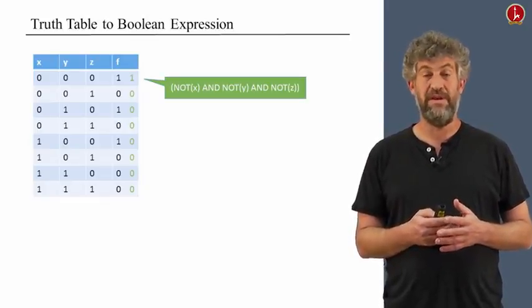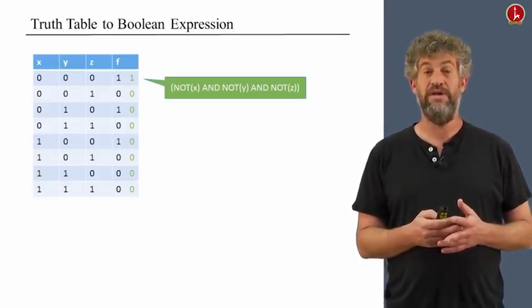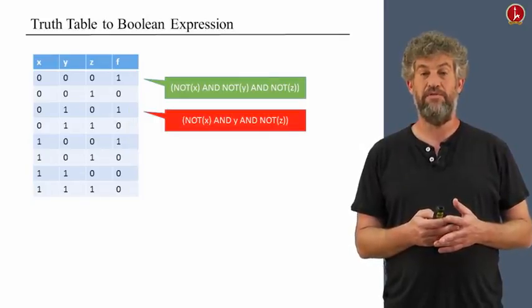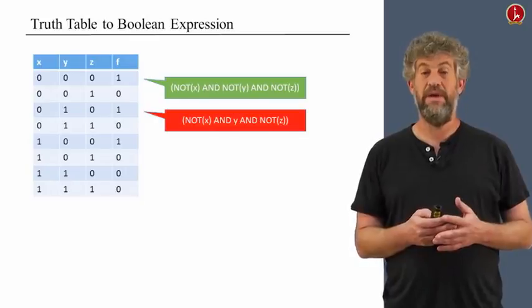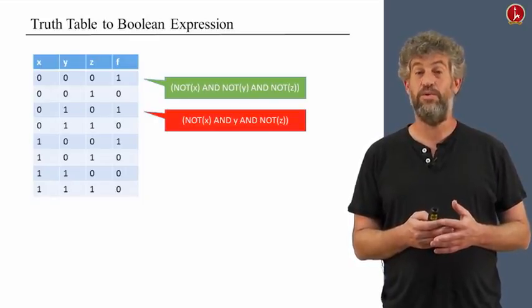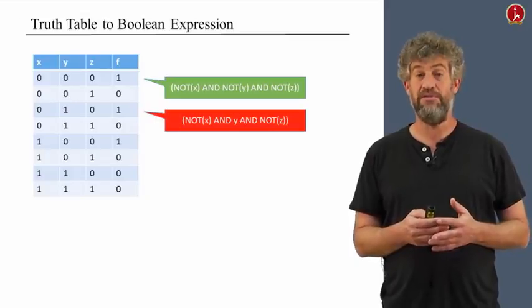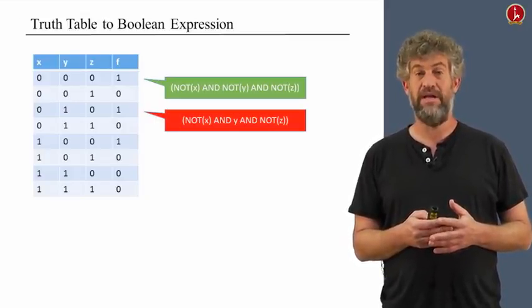So now we have one Boolean function. We do the same thing. We construct another Boolean function, another clause for each row that has a value of 1. So for example, there's another second row with a value of 1. This time, in this row, y equals 1, while x and z equal 0. So the clause we write here is not x and y and not z.